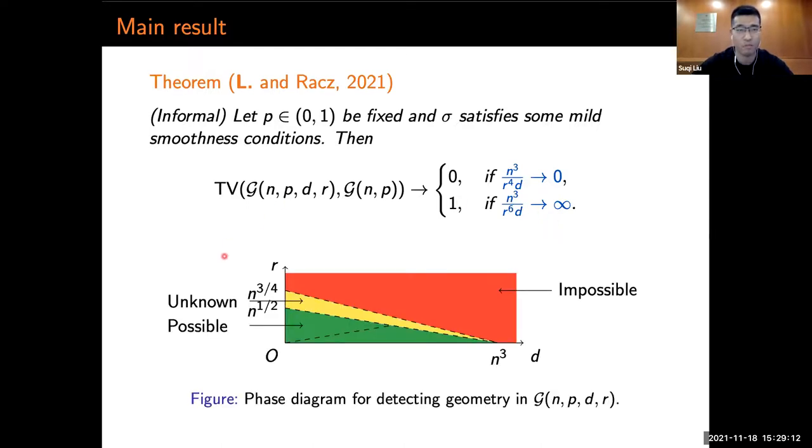Similarly, we have the following phase diagram in the space of R and D. Unfortunately, there is still a region which we don't know.